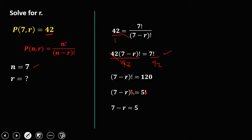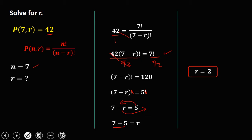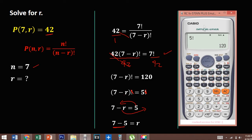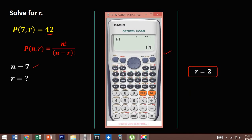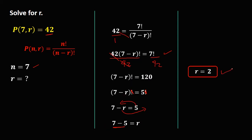To solve for R, transpose 5 — it becomes negative — and transpose R to the right — it becomes positive. So R equals 7 minus 5, which is 2. To check the answer: with R equal to 2 and N equal to 7, P(7,2) equals 42. So R is equal to 2.